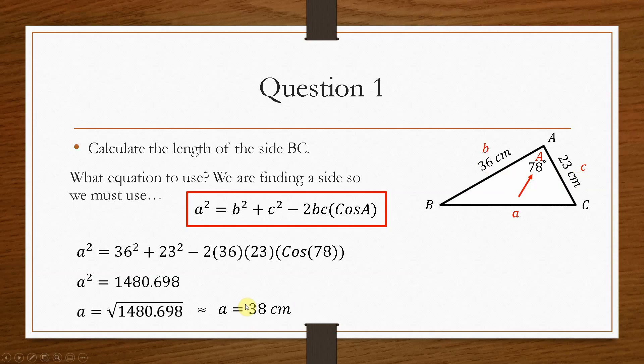Now, you can always do a check on this, because if we get a value, say, of 70, then we can see that it doesn't really fit the size of the already known sides. We're looking for a value in this region. So 38 centimetres is our value of A.